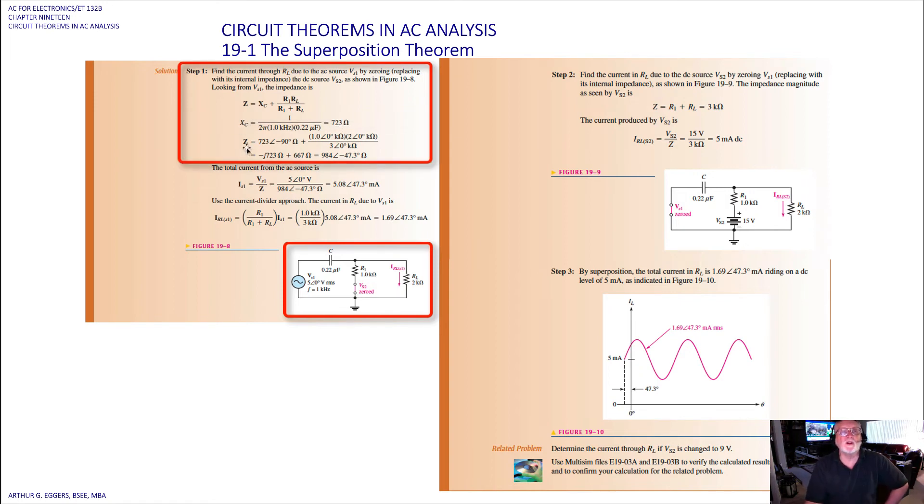The total impedance, 723 ohms at an angle then of minus 90 degrees, added to the product over the sum. Again, you're going to treat this as a quotient so we can combine our terms, multiplication in the numerator, and divide by the denominator.